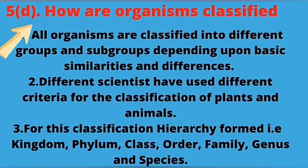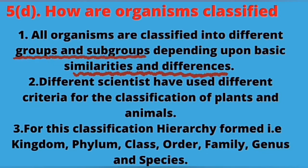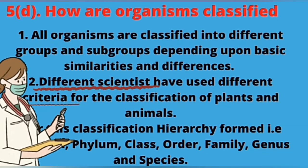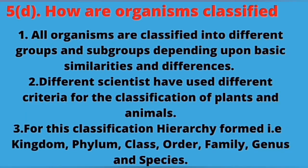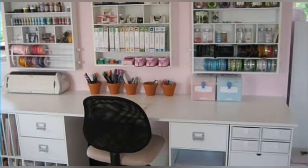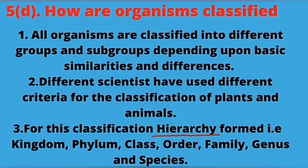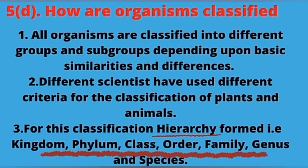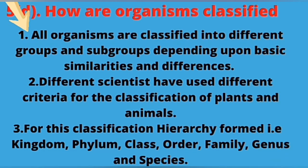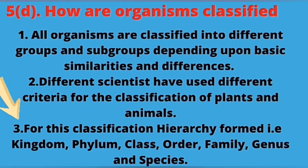Now the last question: How are organisms classified? Animals are classified into different groups and subgroups according to their similarities and differences. Different scientists have used different criteria to classify plants and animals. We classify things so that we can find them easily. In classification, a hierarchy is formed: Kingdom, Phylum, Class, Order, Family, Genus, and Species. Answer: (1) All organisms are classified into different groups and subgroups depending upon basic similarities and differences. (2) Different scientists have used different criteria for the classification of plants and animals. (3) For this classification, a hierarchy is formed: Kingdom, Phylum, Class, Order, Family, Genus, and Species.